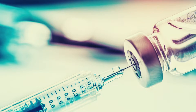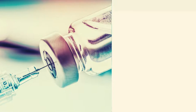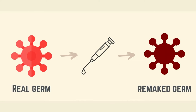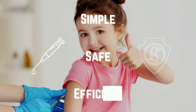A vaccine is a biological substance that gives active acquired immunity against a specific infectious disease. A vaccination usually comprises an agent that looks like a disease-causing germ and is commonly manufactured from weakened or destroyed microbes, their toxins, or one of their surface proteins. Vaccination is a simple, safe, and efficient technique to protect yourself from deadly diseases before they infect you.